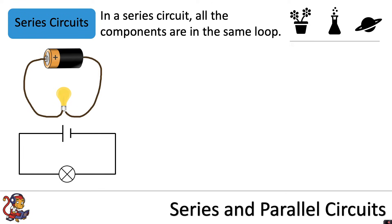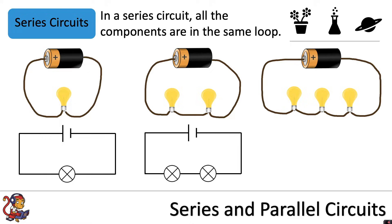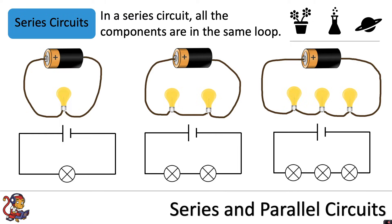If you add in another lamp for a series circuit you have to put it in the same loop of wire like this, and you can keep on adding as many components as you want. They don't have to be lamps — you could add other things like resistors or motors into your circuit as well.